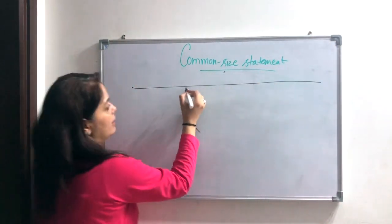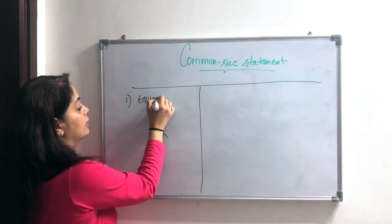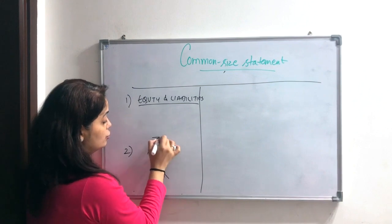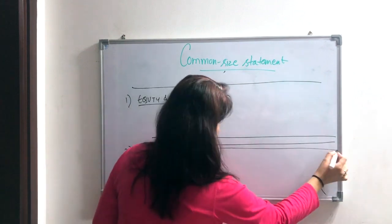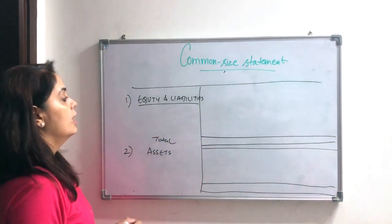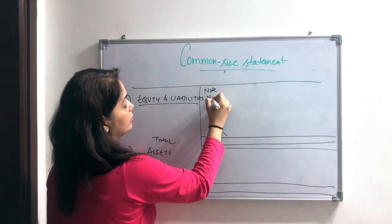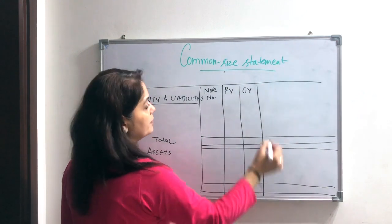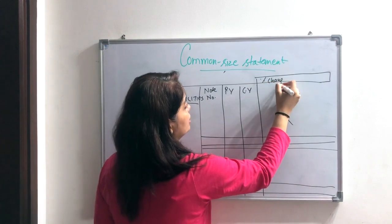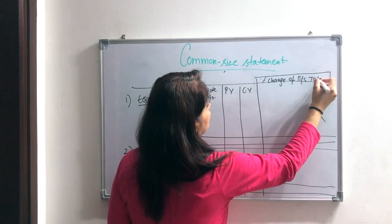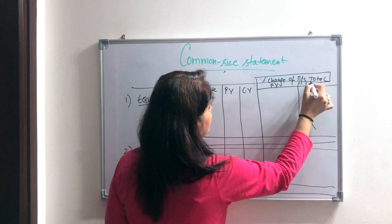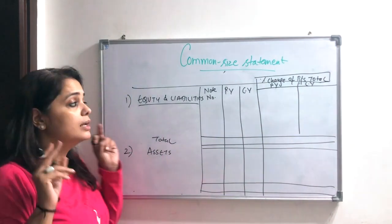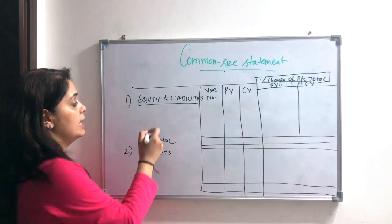Same as the balance sheet format — first we have equity and liabilities, and then assets, with assets total on both sides. The note numbers will be the same as in the comparative statement. First we write the previous year amount, then the current year amount. Here we will write the percentage of the balance sheet total — previous year percentage and current year percentage.